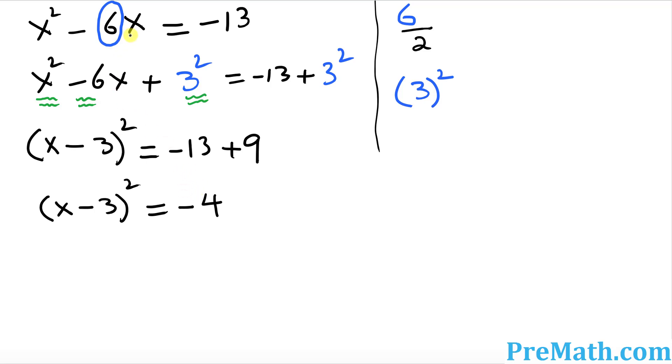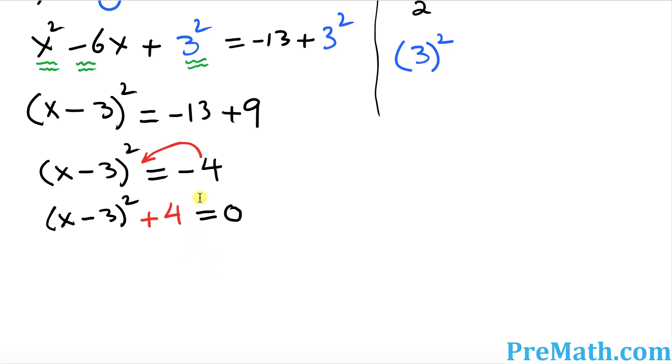Now what I want you to do is move this negative 4 on this side. Whenever you move this negative number on the other side, this negative becomes positive 4. So that means the 0 should be on the right hand side. So I can write as x minus 3 squared, this negative 4 simply becomes positive 4 when you move it to the left, and then equals to 0. Everything moved to left, so 0 is on this side over here.